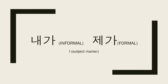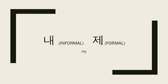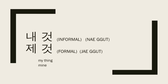A quick recap: if 내 and 제 are added to a subject marker, then it means I, not my. When 내 and 제 are by themselves, they mean my. For example, 내 것 or 제 것 literally means 'my thing,' but when translated into English, we usually say 'mine' — 내 것, 제 것.